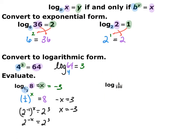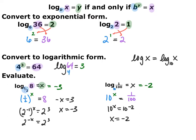Whenever you see a logarithm with no base written, that is the same thing as base 10. Mathematicians are lazy, and log base 10 comes up a lot, so we omit the base. Pause the video and evaluate log of 1 over 100. Log of 1/100 is the same as log base 10 of 1/100. Setting it equal to x and converting to exponential form: 10 to the x equals 1/100. Since 1/100 equals 10 to the negative 2, x equals negative 2.